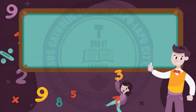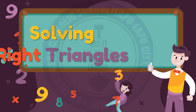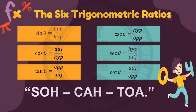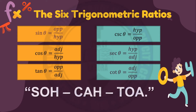This time, we will solve right triangles using trigonometric ratios. In solving right triangles, it's a must to recall the concept of trigonometric ratios. Let us recall SOH-CAH-TOA.